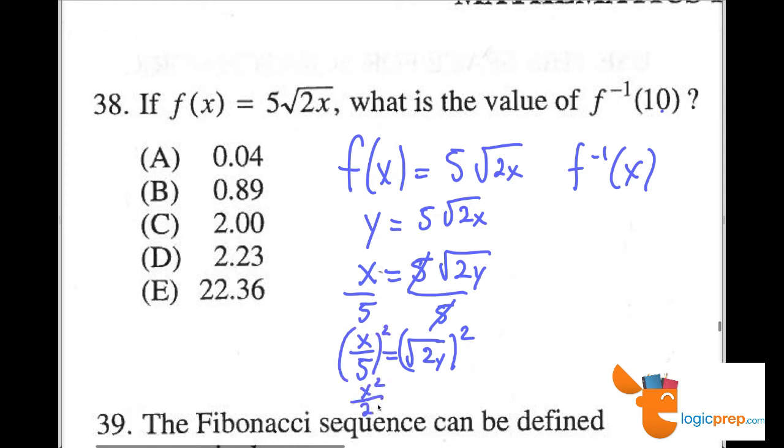We have x squared over 25 equals 2y. And then we would divide by 2 or multiply by one half here.